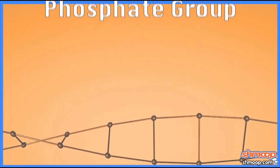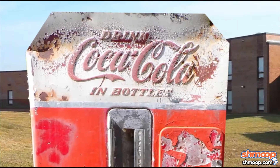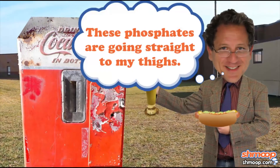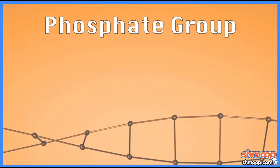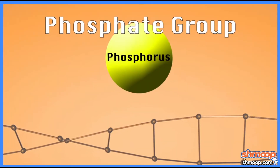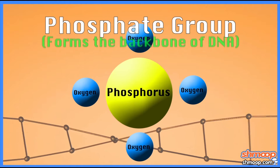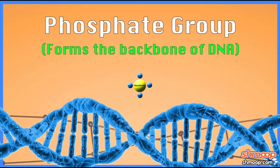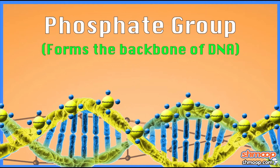Now, what is a phosphate group? I'm thinking you go to that old-style Coca-Cola stand with a hot dog and a shake. Well, sort of. A phosphate group basically has a phosphorus and some oxygen atoms in it, and it forms the backbone of the DNA. It's all along the outside of the DNA molecule and they link up together to form the chain.